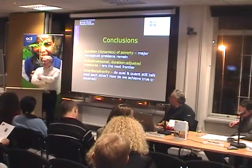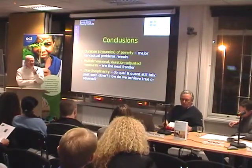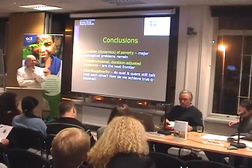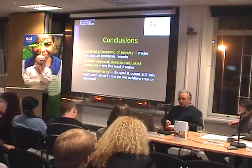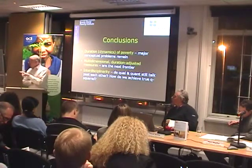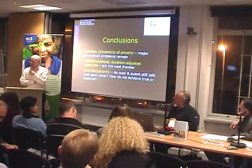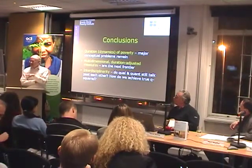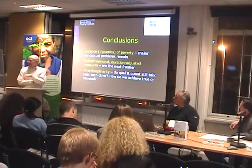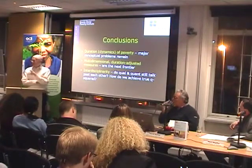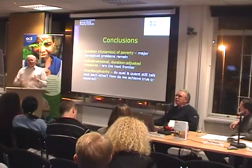So what are we concluding? We're concluding that, as David says, the dynamics of poverty are absolutely crucial. There are major conceptual problems we have to break through. One problem when we look at poverty over time is: how do you value ethically different spells in poverty? Or, as economists say, how do you construct the welfare function?